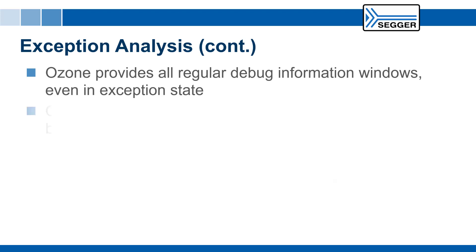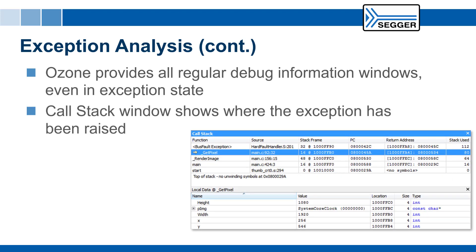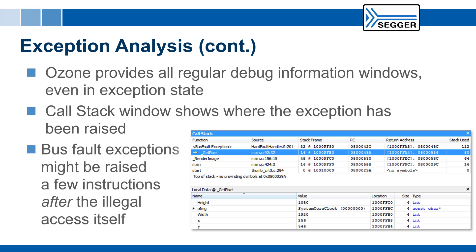The call stack window shows where the exception has been raised. With the registers window and the locals window, the faulty state can then be inspected. Bus fault exceptions might be raised later than the illegal access, usually a few instructions later. In these cases, Ozone's instruction trace can help to identify which instructions have been executed before.